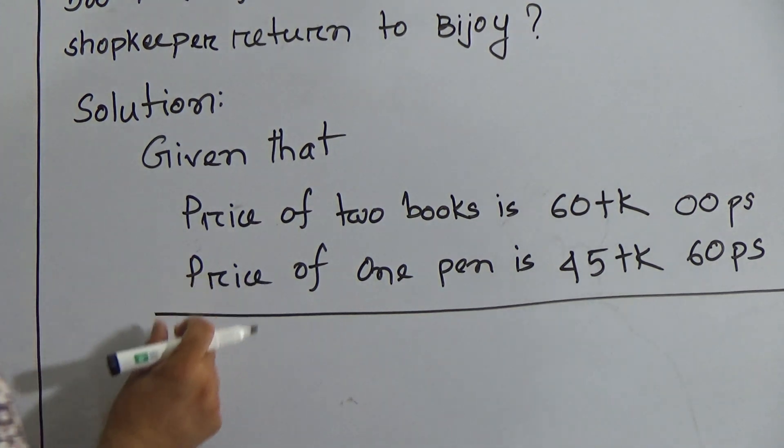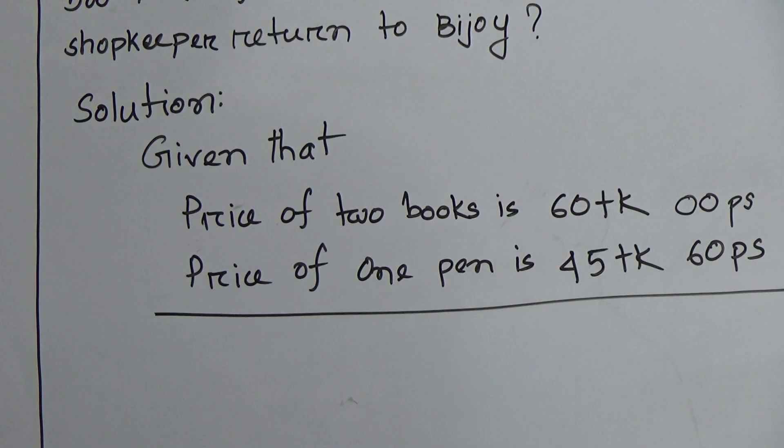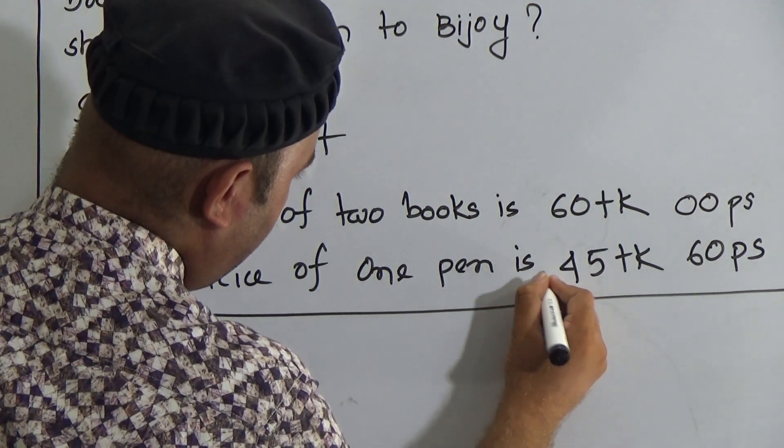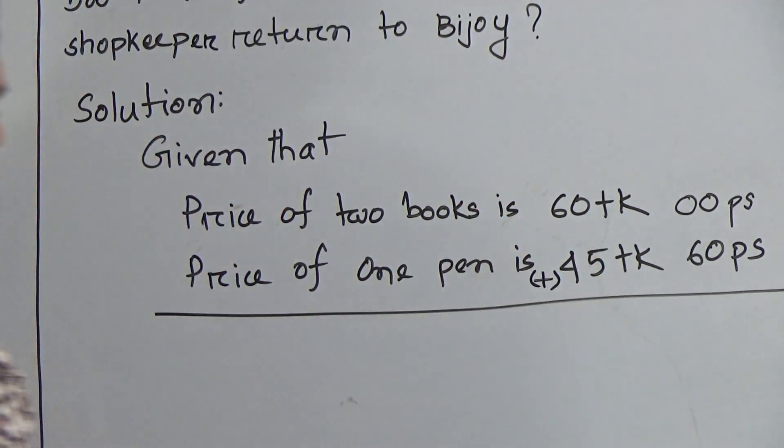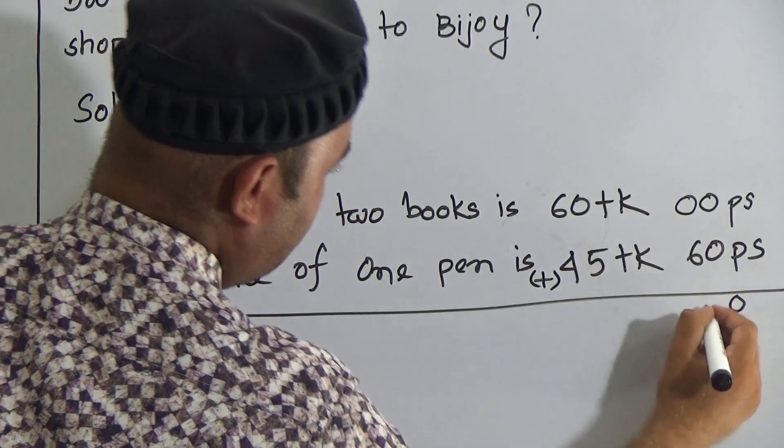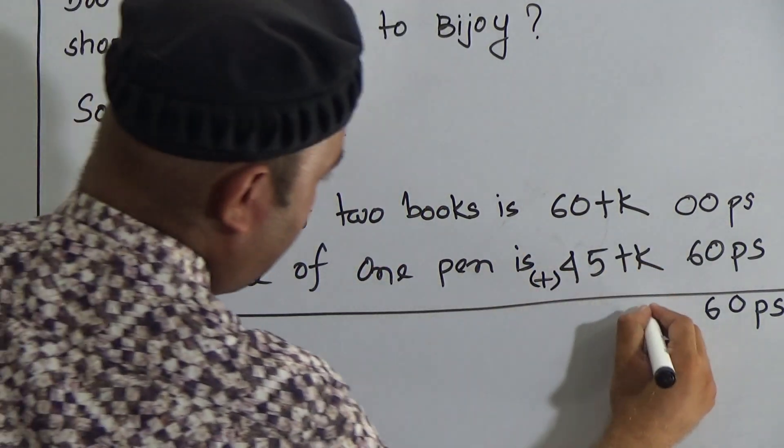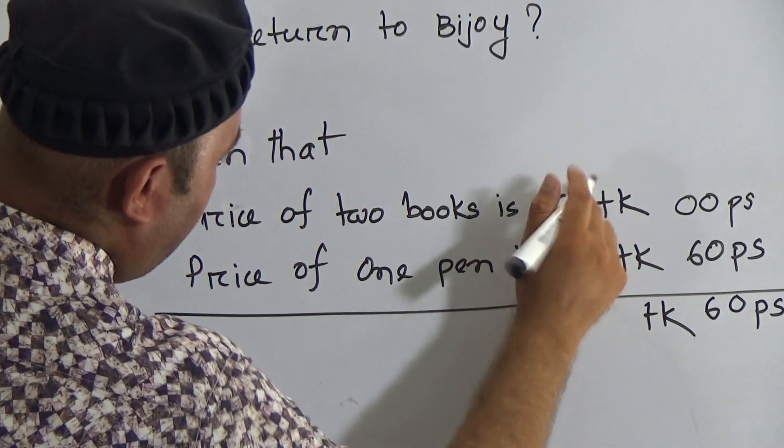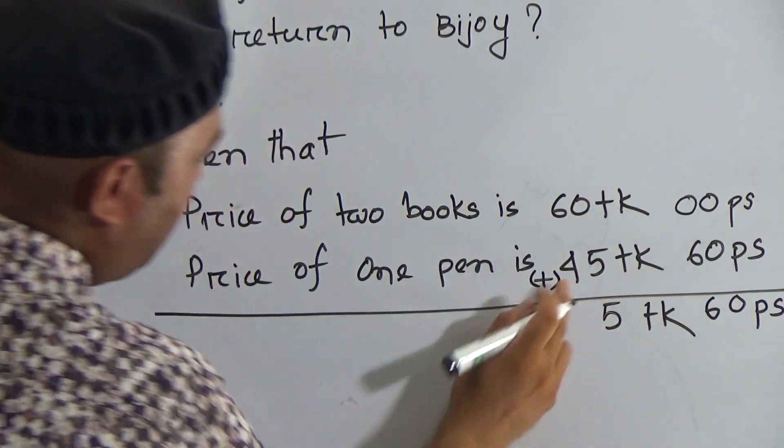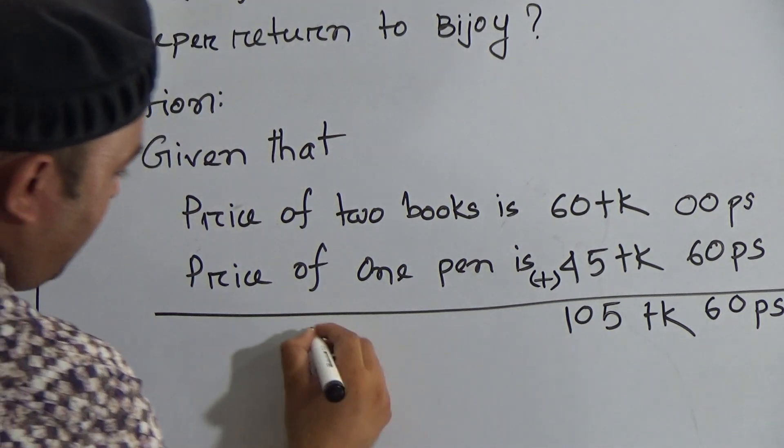Can you say how much money did Bijoy spend? To find this answer we have to add these two numbers. 0 plus 0 here is 0, 6 plus 0 is 6, so here is 60 poises.